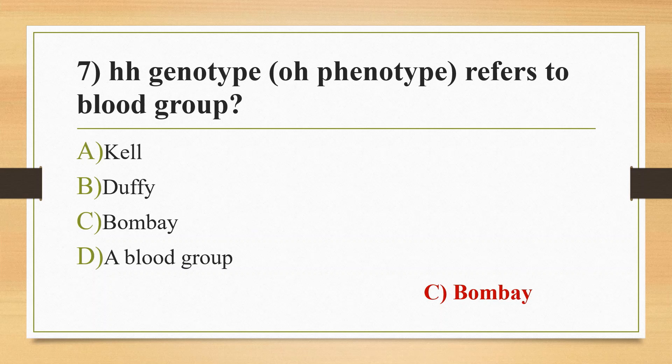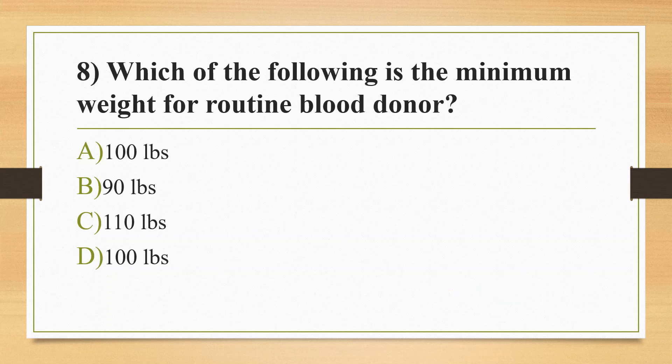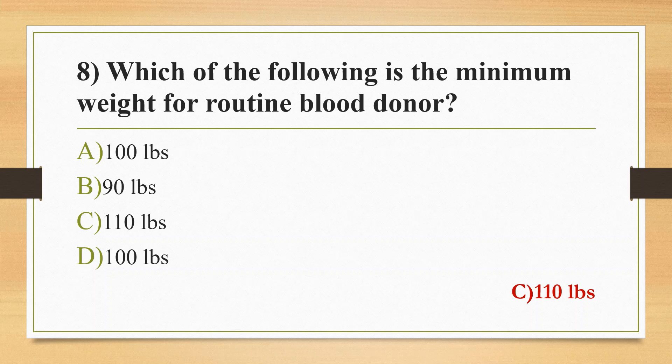Eighth question: which of the following is the minimum weight for a routine blood donor? Option A: 100 LBS. Option B: 90 LBS. Option C: 110 LBS. Option D: 100 LBS. Two options are the same — A and D. The answer is option C, 110 LBS. LBS is the unit in pounds, equivalent to 50 to 55 kilograms.